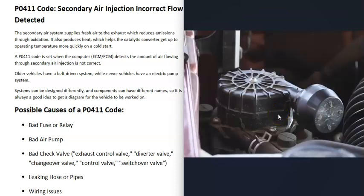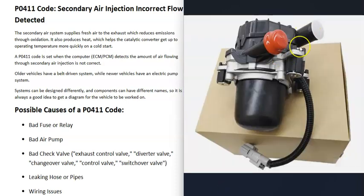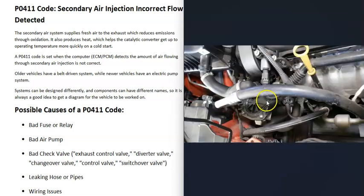The next possible cause is a bad air pump — it's very common for these to go bad and need to be replaced. They usually have two ports: one coming from an air filter tied to the main intake air box, and another port sending air into the system. You can test these pumps — they're basic air pumps that start pumping when voltage is applied. There are good YouTube videos on how to test them, and I'll put a link below.